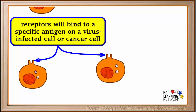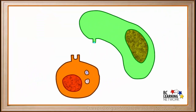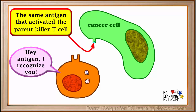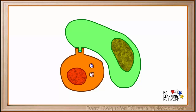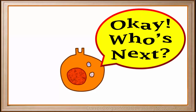Killer cells look for antigens on the surfaces of virus-infected cells or cancer cells. One of our cells finds a cancer cell. This cancer cell carries a copy of the same antigen that activated the original parent killer T cell. So our killer T cell binds to this cancer cell. The killer T cell releases chemicals that puncture the cell membrane of the cancer cell, then releases chemicals that go through the holes in the membrane and kill the cancer cell. This killer T cell then produces more deadly chemicals to store in its vacuoles, and is now ready to find and kill another cancer cell.